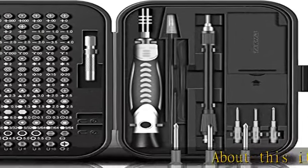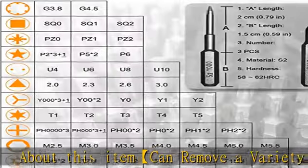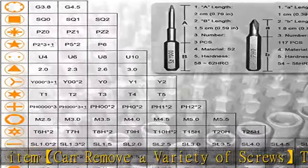About this item: can remove a variety of screws. The 130-in-1 electronics repair tool has as many as 120 bits.